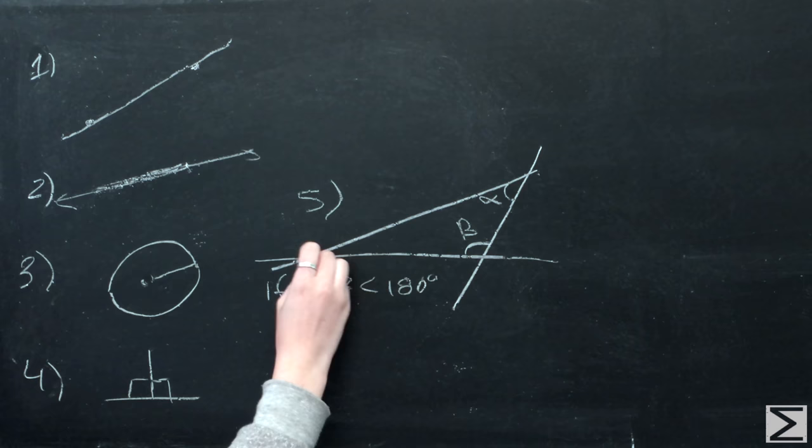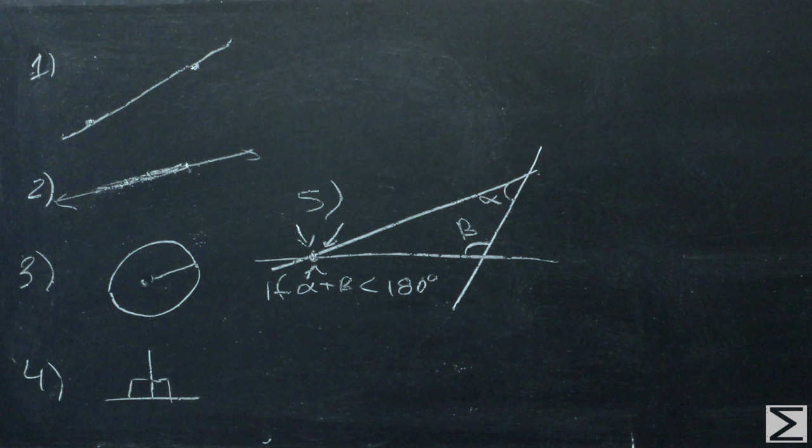Postulate one: it is possible to draw a straight line from any point to any point. Postulate two: it is possible to extend a finite straight line continuously in a straight line, meaning a line segment can be extended past either of its endpoints to form an arbitrary line segment.